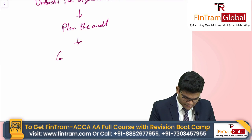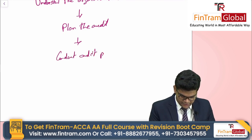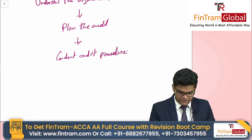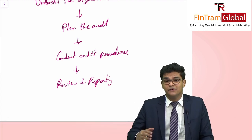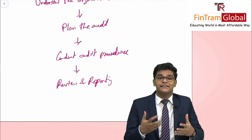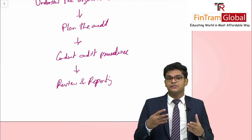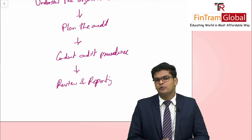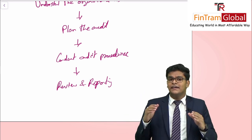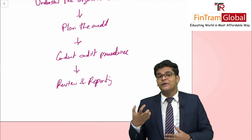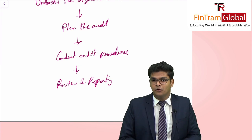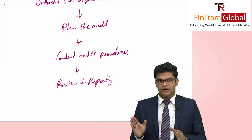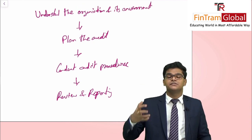After planning, we implement the audit — we conduct audit procedures, of which there are various types. Then we enter the review and reporting stage. In the review stage, we review our own work after conducting the audit. In reporting, the auditors don't orally provide their opinion to management. Rather, they prepare a report known as the auditor's report, where they provide their opinion regarding the financial statements. You will learn about each and every aspect of these steps throughout the audit and assurance syllabus.